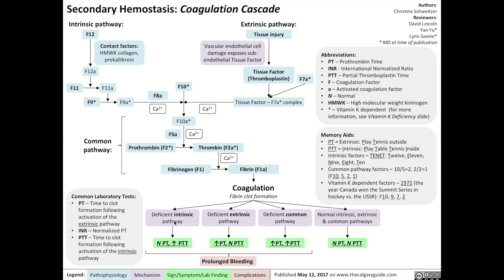Note that the APTT does not pick up tissue factor, factor 7, and factor 13 deficiencies. Why is a test that measures the intrinsic pathway known as the partial thromboplastin time, when thromboplastin is part of the extrinsic pathway? Because this test, the APTT, measures the partial thromboplastin time, not the thromboplastin time. Thromboplastin is actually a mixture of both phospholipids and tissue factor, whereas partial thromboplastin is made up of just phospholipids and not tissue factor.